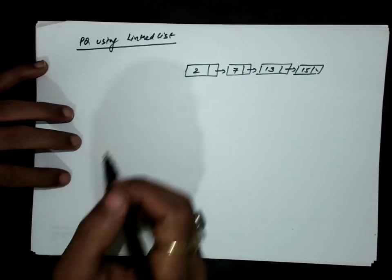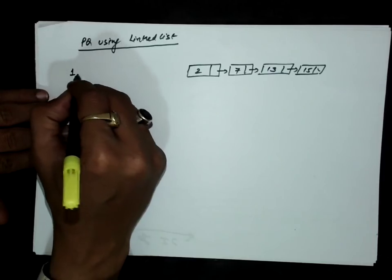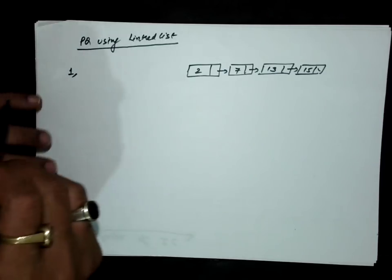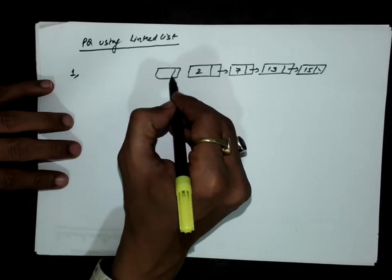Let us say we have to insert element 1 into this priority queue implemented as a linked list. Priority number 1 is the highest priority, and obviously it should be inserted at the beginning of this linked list.